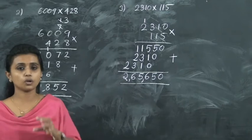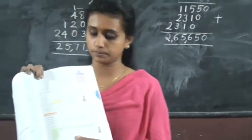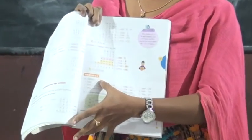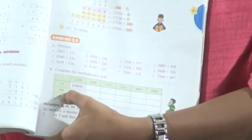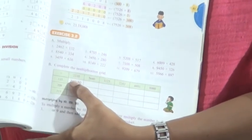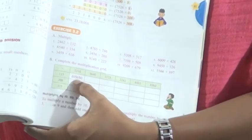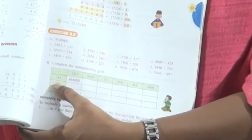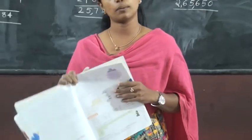Now based on this, there are a lot of such problems in your textbook. I will give you the activity. Take page number 81, Exercise 3.2. You want to do all these problems in your notebook. You want to complete the multiplication grid — just multiply. 2310 is the question, you want to multiply it with 150. Write it in your notebook and write only the answers in your textbook.